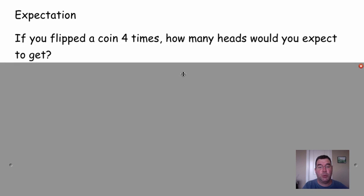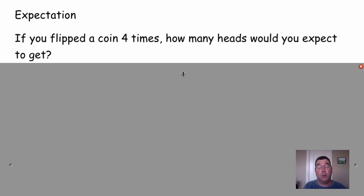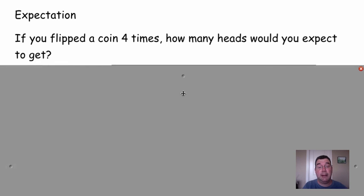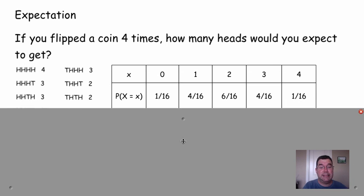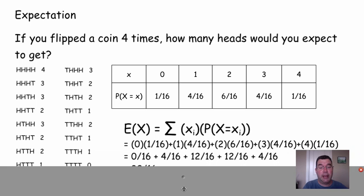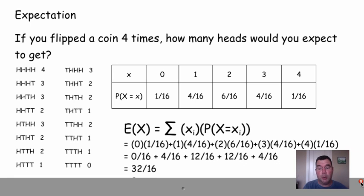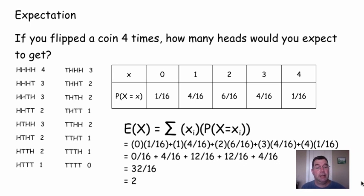We're going to talk about a situation where you're flipping a coin four times, and I want to know how many heads I would expect to get. So what I did, I actually wrote out what could possibly happen, and you'll see that over here on the left, I've got heads heads heads heads, then heads heads heads tails. I listed all 16 possibilities, and with each outcome, I listed how many heads are in that outcome.